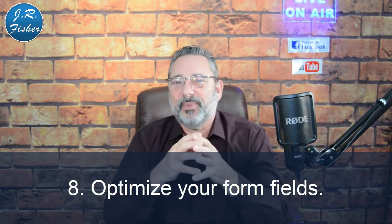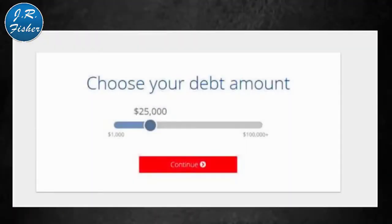Number eight: optimize your form fields. If you ask for a lot of information upfront — first name, last name, phone number, email, and address — the odds are people aren't going to opt in. The highest converting pages only ask for an email address. Bills.com, a debt management system, does this smartly by first asking customers to choose their debt amount, then collecting their information afterwards — they're already engaged. Users are more likely to give an email address than a phone number, so always go for the email first and follow up later.